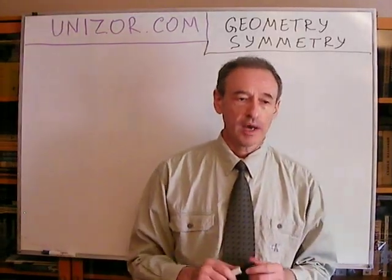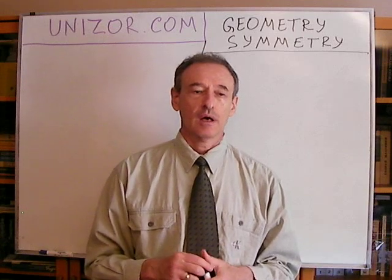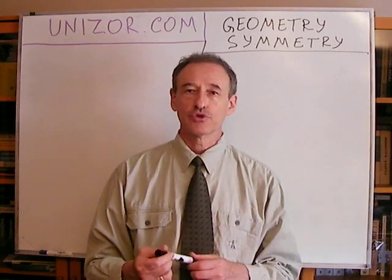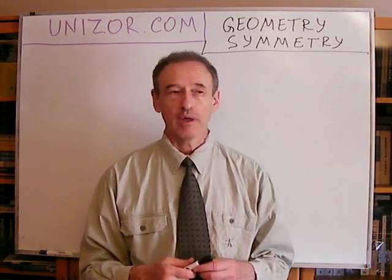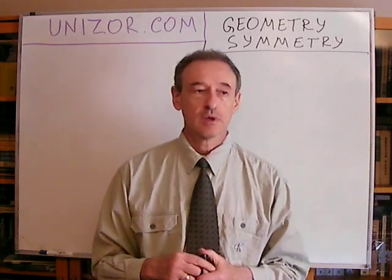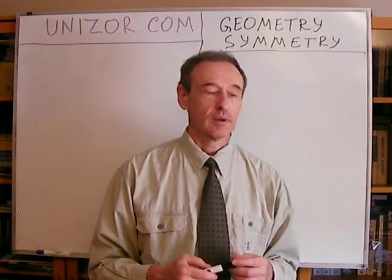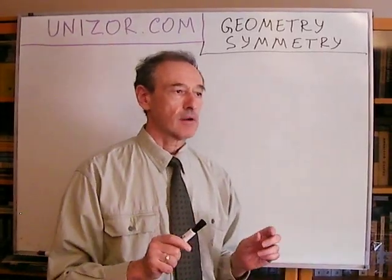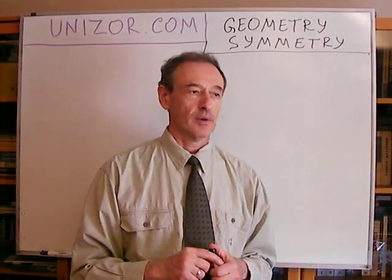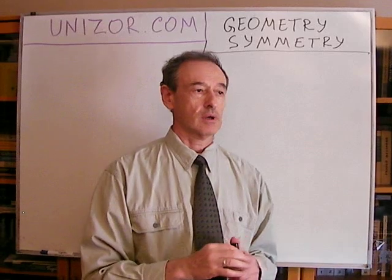During my previous lecture about congruent geometrical figures, I was talking about certain transformations which help to identify or to prove that certain geometrical objects are congruent. One of these transformations was called a reflection — reflection relative to the axis. Another was a rotation. The word symmetry is very closely related to these two transformations: rotation around a certain point and reflection around a certain axis.